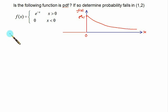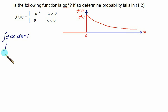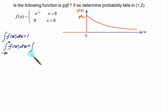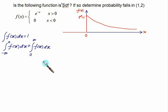To check whether this is a valid PDF, the area under the graph must equal 1. We split the integral from minus infinity to 0 plus 0 to plus infinity of f(x) dx. For x less than 0, the function value is 0, so that integral is also 0.